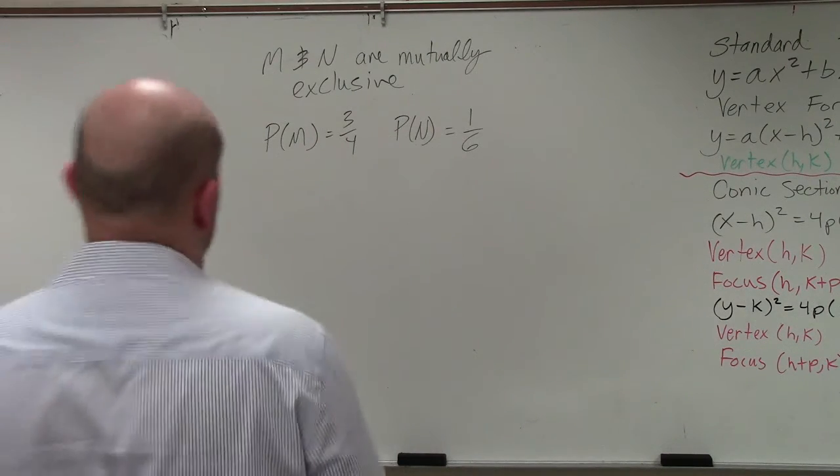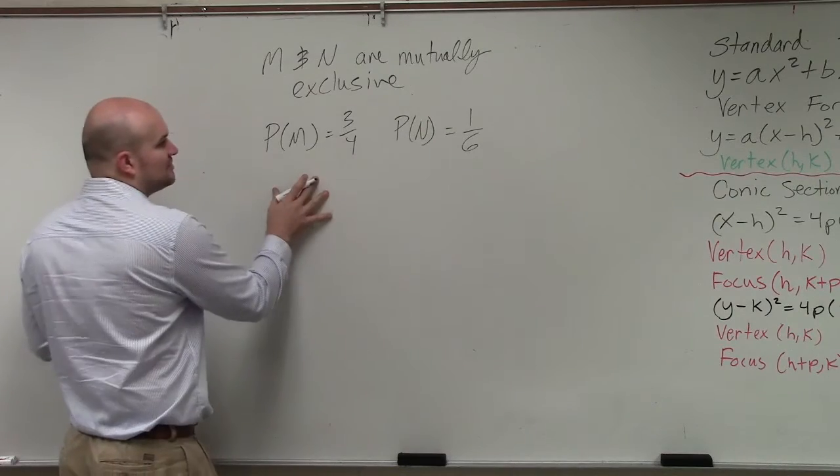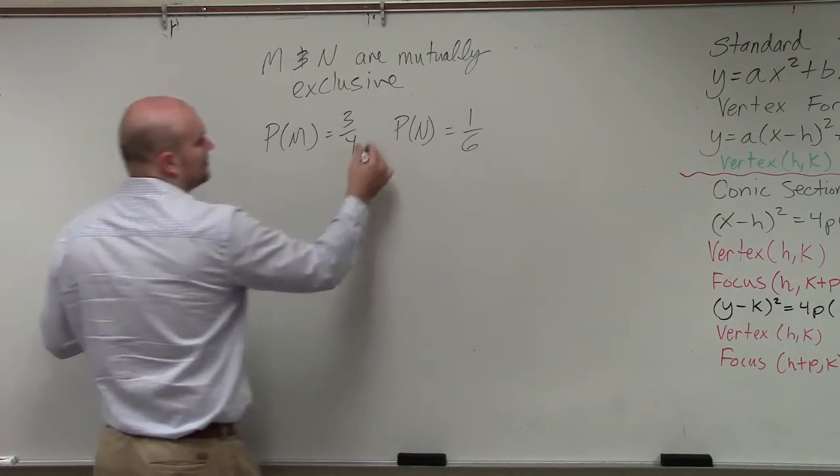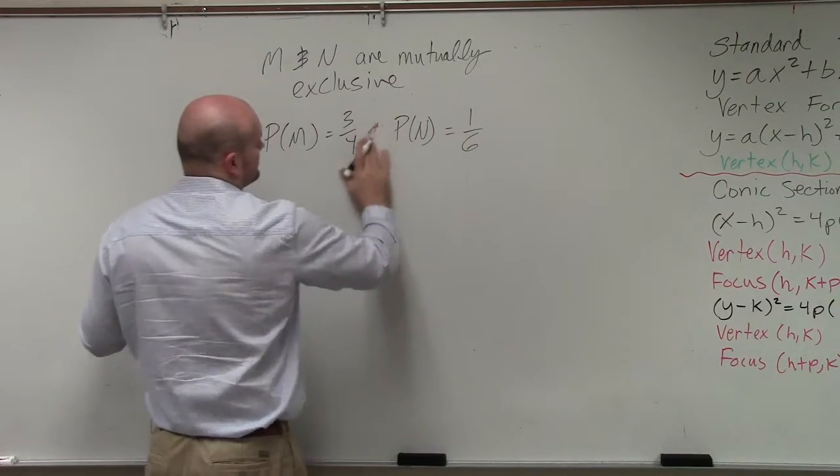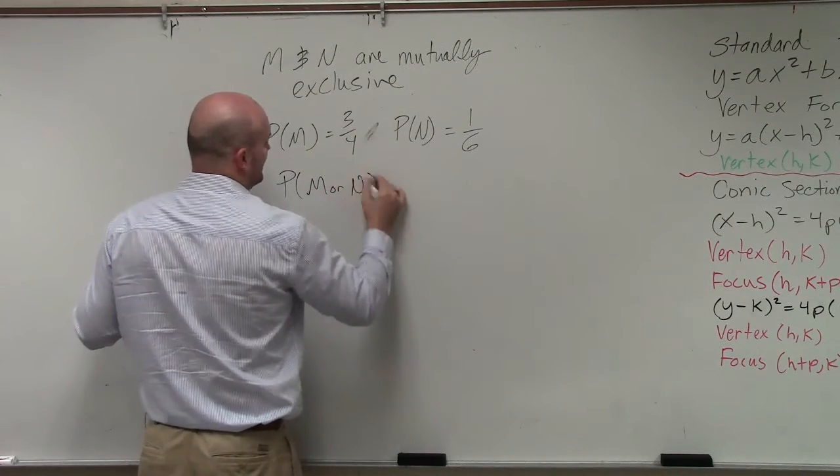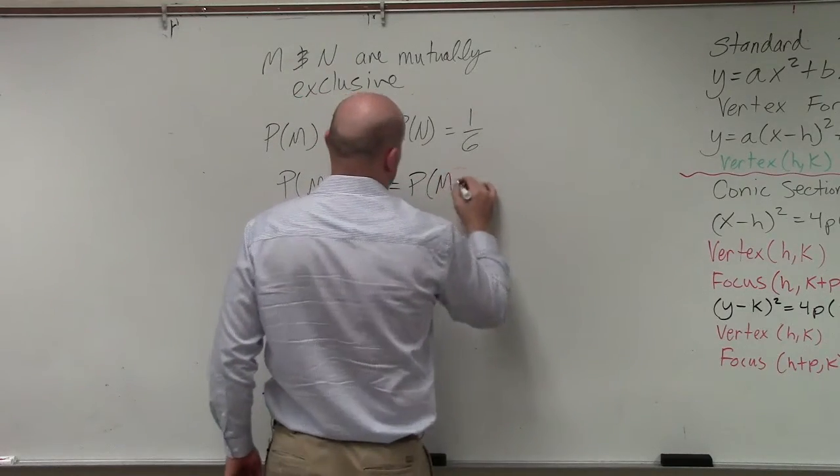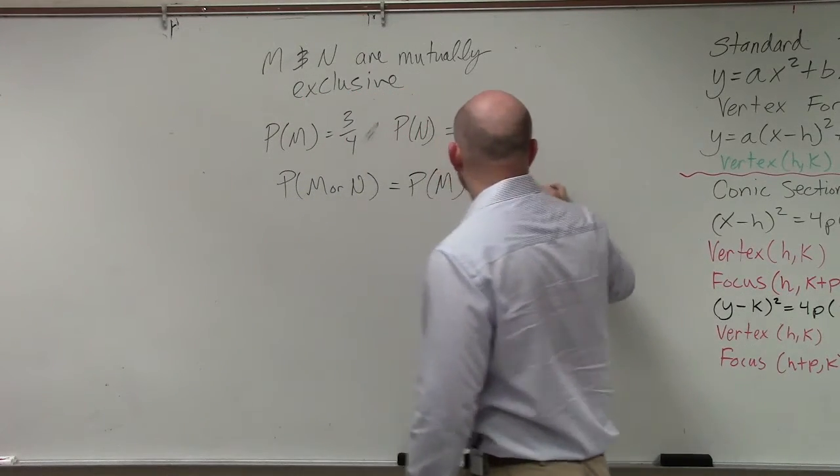So all it's simply saying, as long as you have two mutually exclusive events, all you have to simply do to find the probability of this. So what they're asking is probability of M or N. All we're simply going to do then is take the probability of M and then add it to the probability of N.